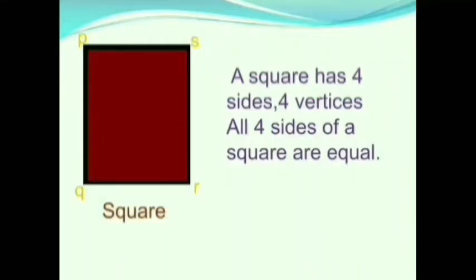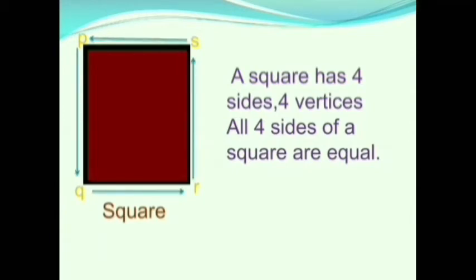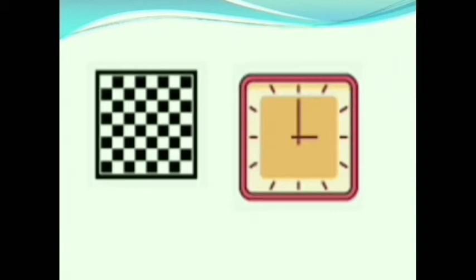Now we will learn about square. A square has 4 sides and 4 vertices. All 4 sides of a square are equal. Let us see some examples of square-shaped objects. This chess board looks like a square, and this clock also looks like a square. There are so many things in our house which are in square shape — find them out!